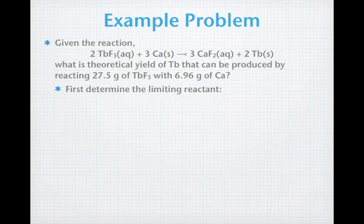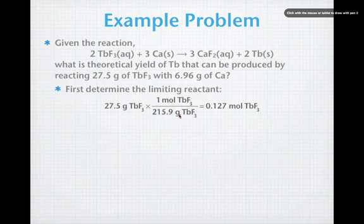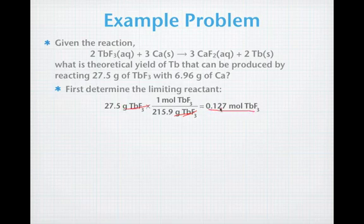We'll take our 27.5 grams of terbium-3-fluoride and multiply that by one mole of terbium-3-fluoride over the molar mass, 215.9 grams per mole. By the way, if you can't find terbium on the periodic table, it is in the lanthanides, so on the first row in the F block. Cancel out the grams of terbium-3-fluoride and we're left with 0.127 moles of terbium-3-fluoride as our first reactant.